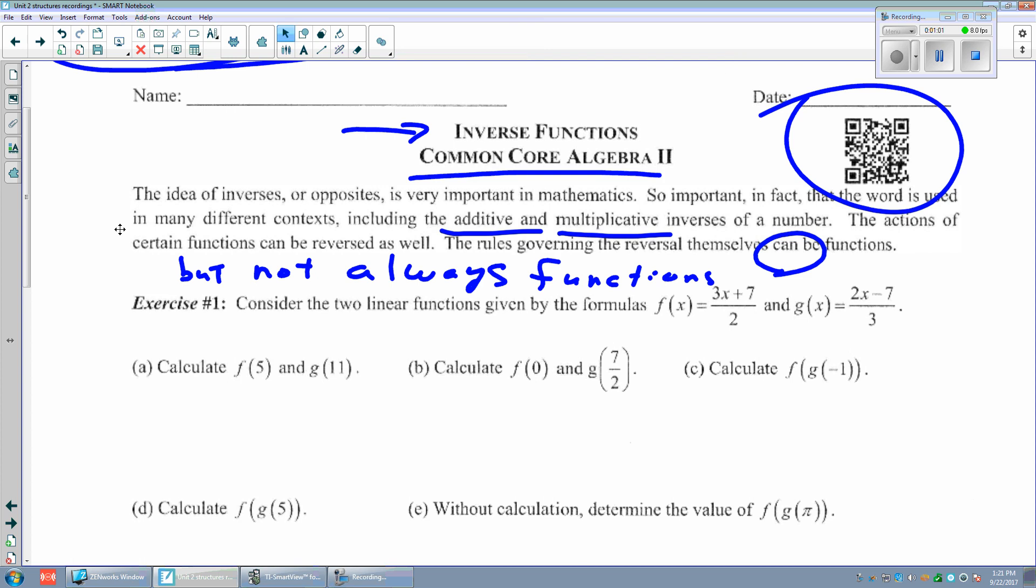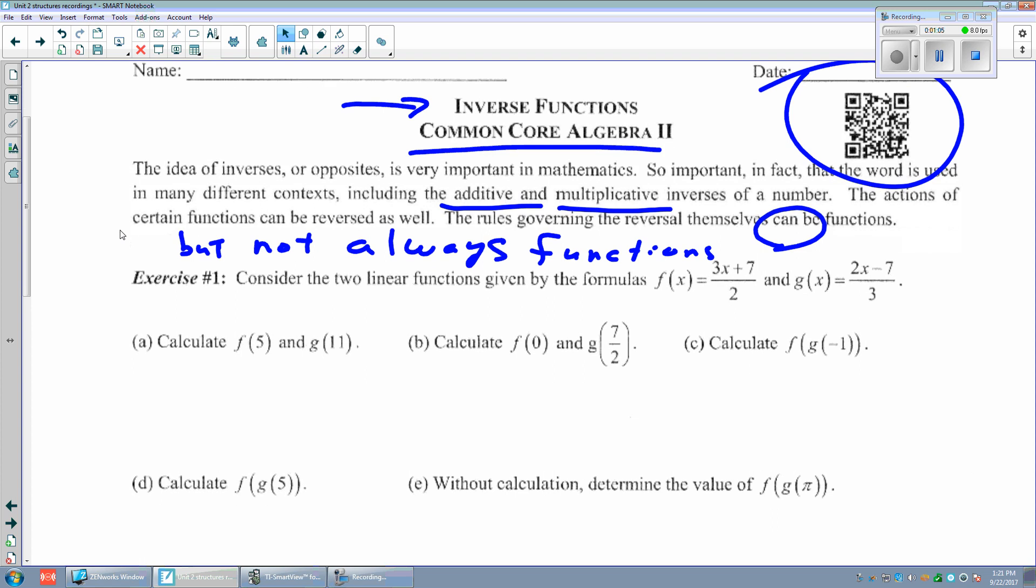Exercise 1: Consider two linear functions given by the formula f(x) = (3x + 7)/2 and g(x) = (2x - 7)/3. Calculate f(5) and g(11).